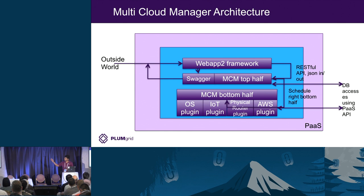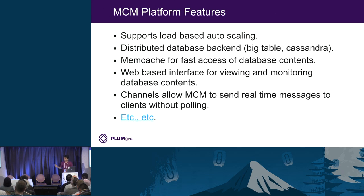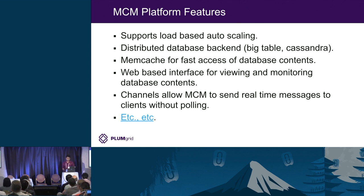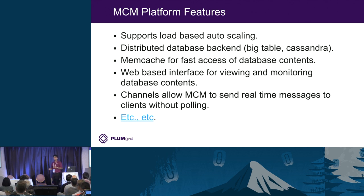This whole thing is encapsulated inside the PaaS, so the platform APIs are just what App Engine provides. Because this was done using a PaaS, from day one the multi-cloud manager supports load-based auto-scaling, has a distributed database backend, memcache, a web-based interface for viewing and monitoring database contents, and channels to send real-time messages. I got all of this almost for free — I didn't have to write a single line for the platform. It just came because these are features App Engine provides.